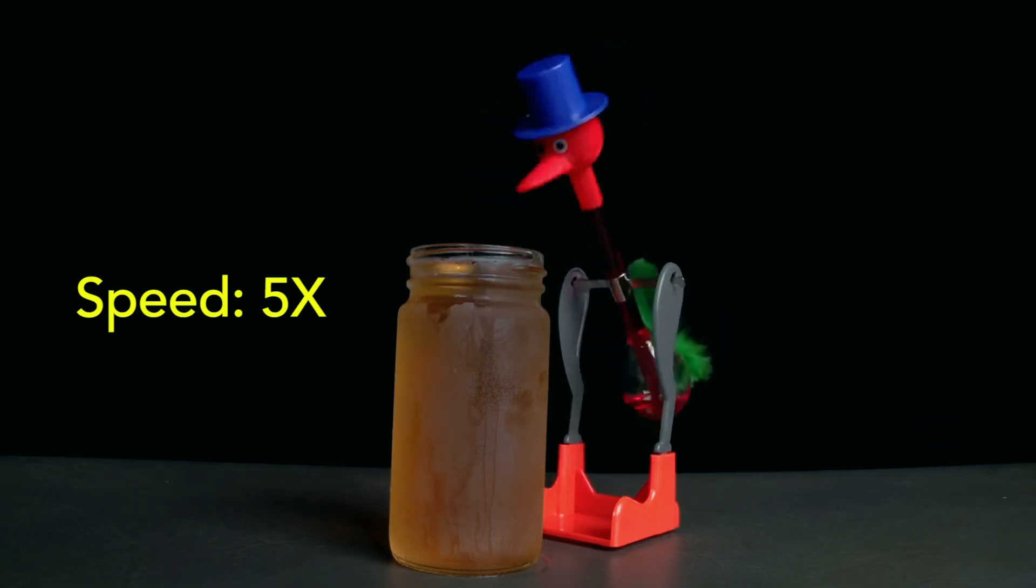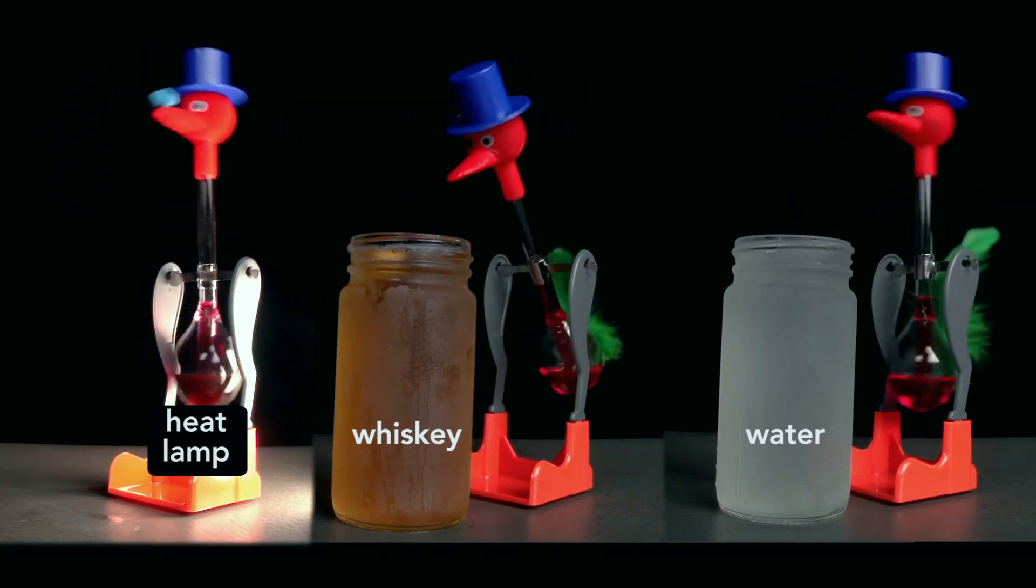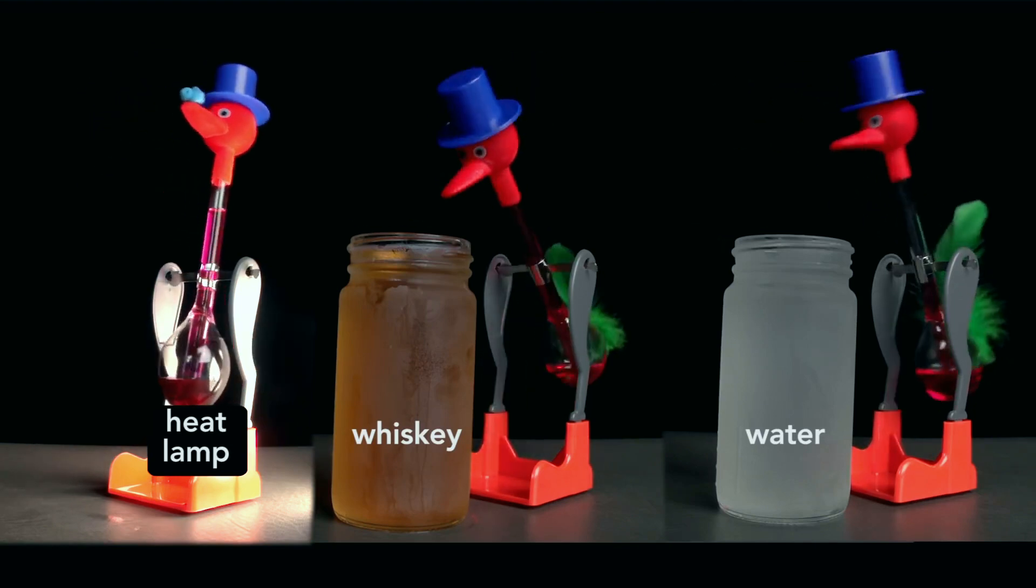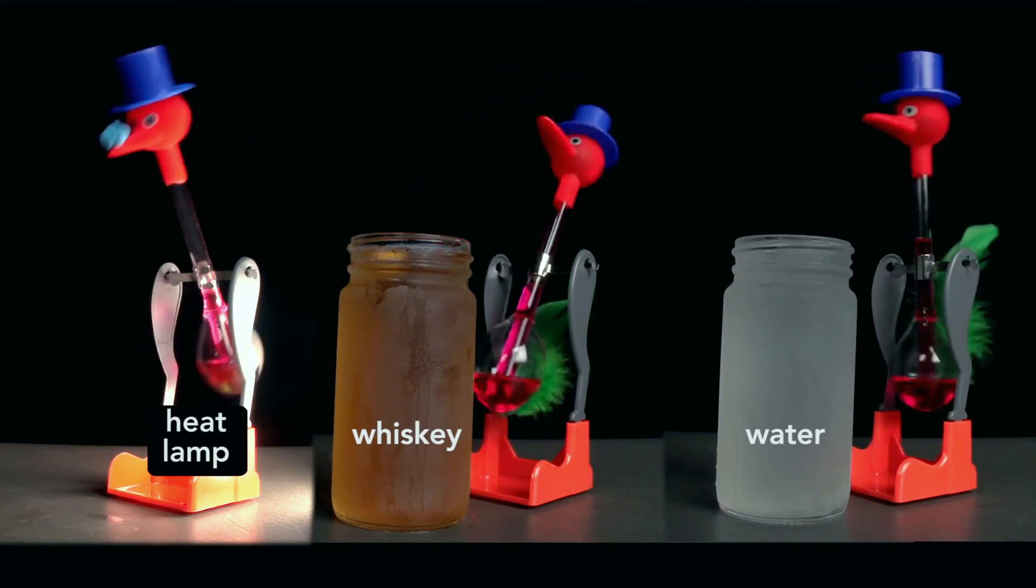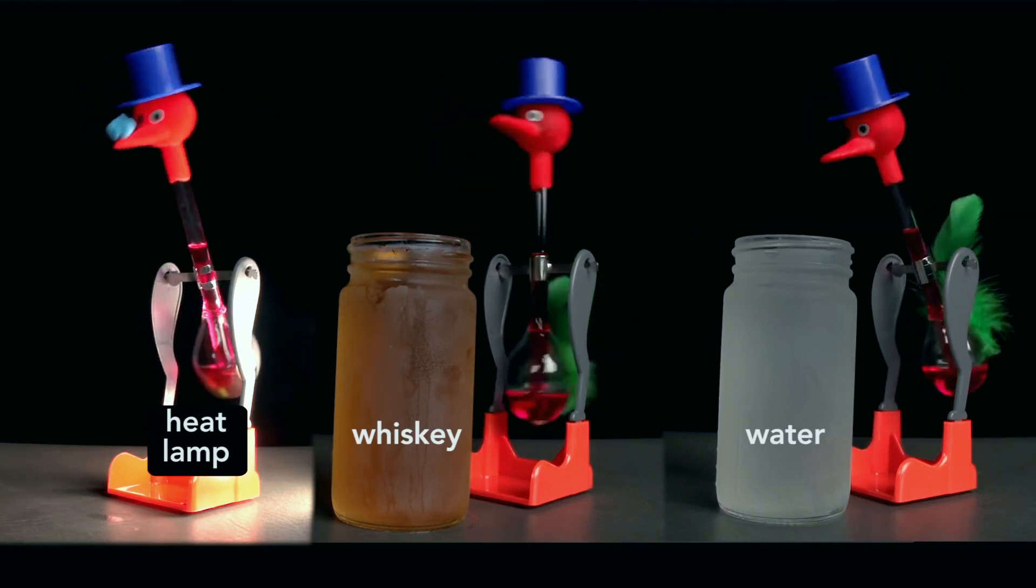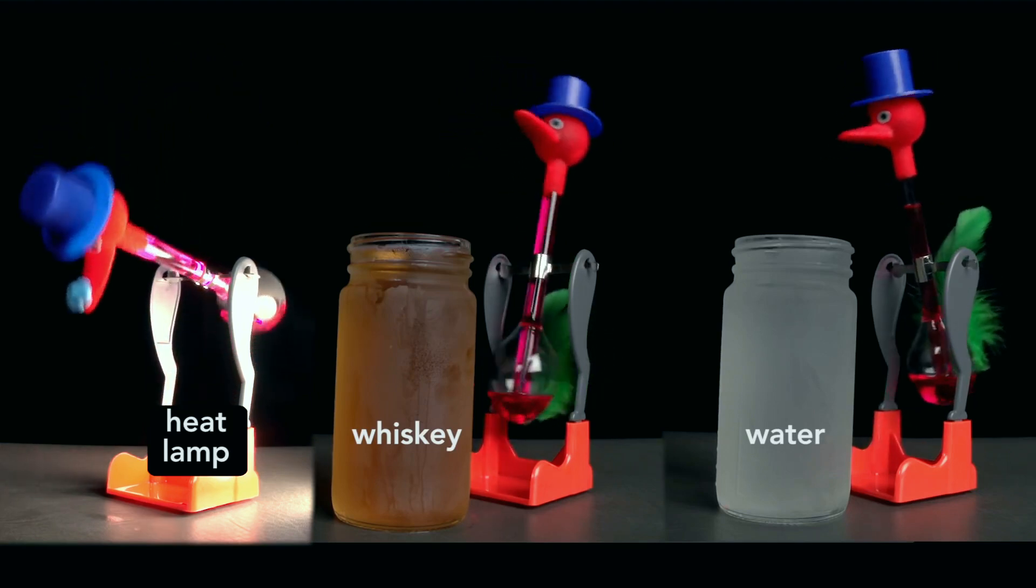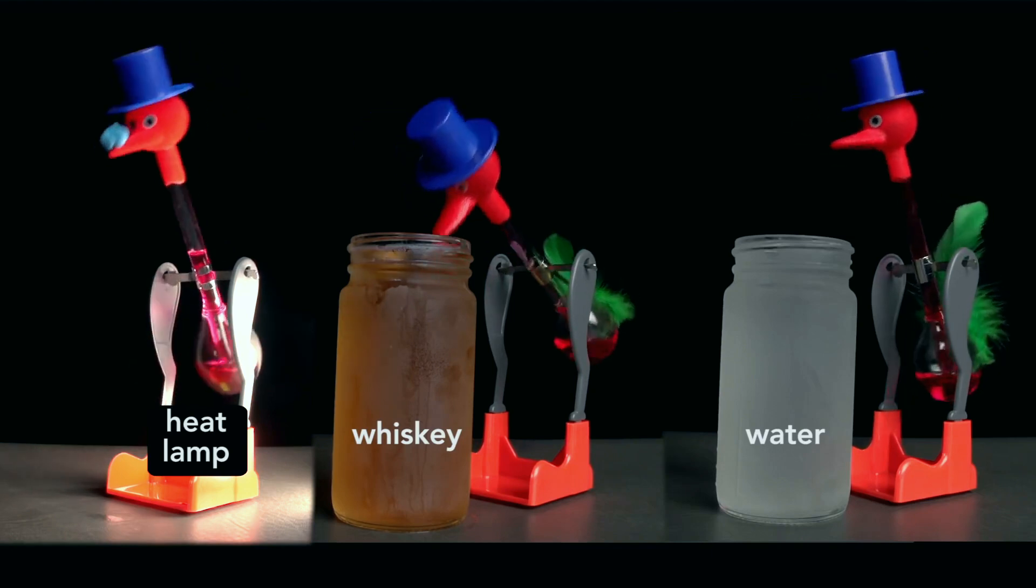We can also now understand why the bird's rate of drinking differs among the three methods I use to activate the bird: a heat lamp, whiskey, and water. Roughly, the heat bird takes three drinks for every one of the water bird. The whiskey bird takes two for every drink of the water bird. The reason the bird drinks whiskey faster than water is because the rate of evaporation of the alcohol is greater than that of water. This means that heat is withdrawn faster from the head, and so more vapor condenses in a shorter amount of time, which accelerates the pressure difference.